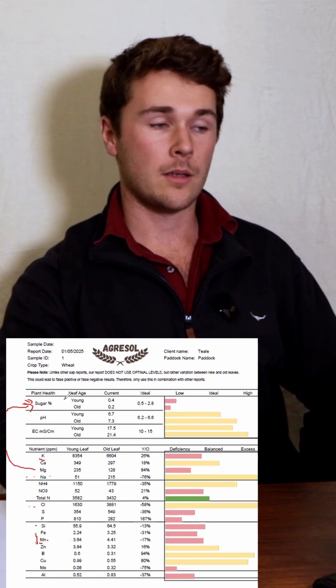So this deficiency here might actually just be due to the deficiency in manganese. Even at this point, I wouldn't apply potassium depending on where the crop is in the season. If it's anywhere but grain fill, I wouldn't even consider it. I would just address the manganese deficiency.